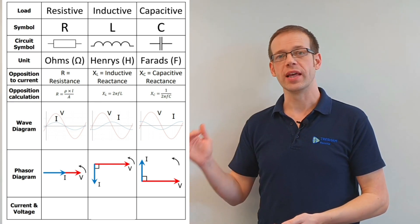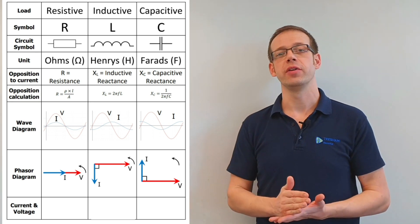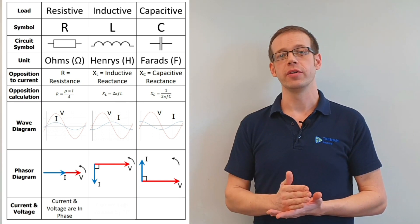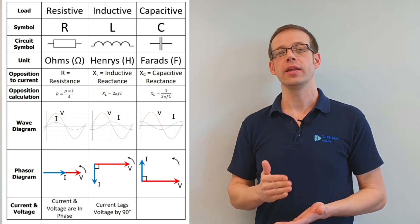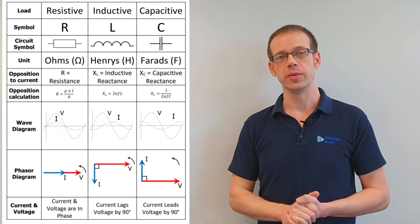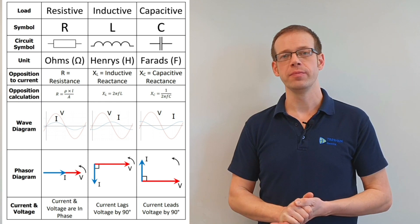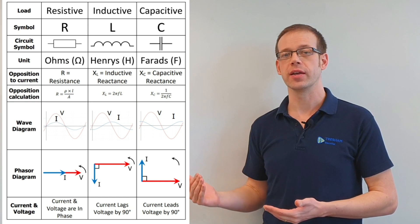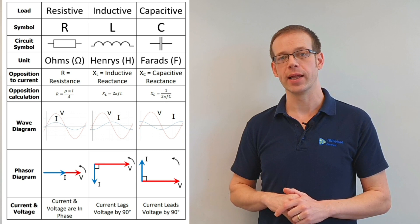To summarise these relationships: in a purely resistive load, current and voltage are in phase; in a purely inductive load, the current lags the voltage by 90 degrees; and in a purely capacitive circuit, the current leads the voltage by 90 degrees. We also have the handy mnemonic CIVIL — in the capacitive circuit, current comes before voltage, whereas in the inductive circuit, current comes after voltage — helping us remember the leading and lagging relationship.